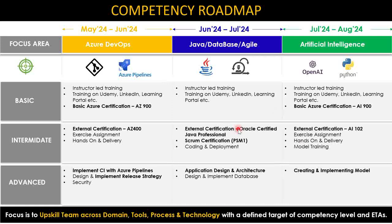Let's come back to the competency roadmap. The very first thing you have to keep in mind is your focus area. For example, in this video I've taken Azure DevOps and Java from an Agile process perspective, and Artificial Intelligence. This could be different for your IT landscape, technology landscape, or process landscape — these are just samples you can change to fit your context.